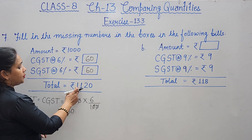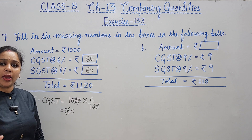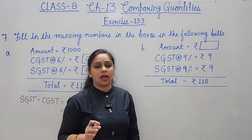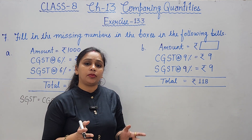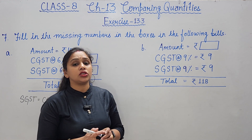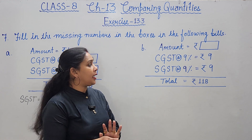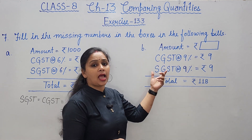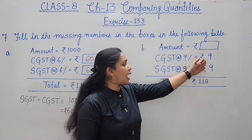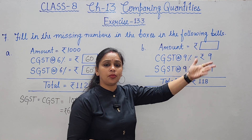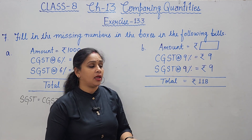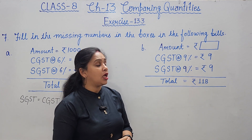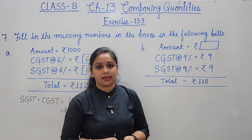Adding 60+60 = 120 plus 1000, the answer matches 1120. Next part: the amount is not given but CGST 9% = rupees 9, SGST 9% = rupees 9, so total GST = 18 rupees paid, and total amount paid was 118 rupees. What was the object's price?